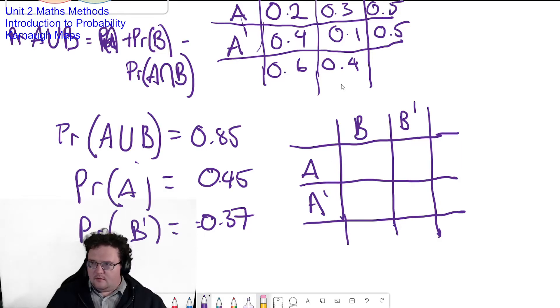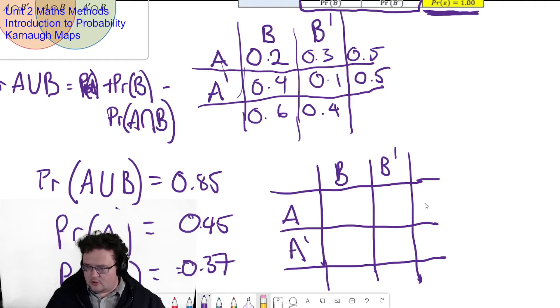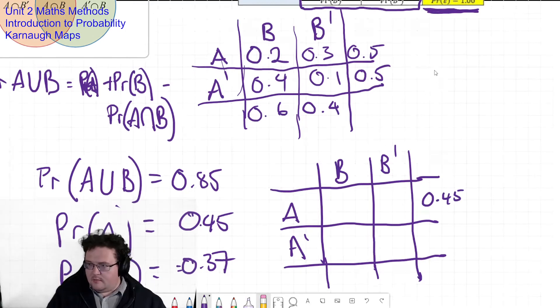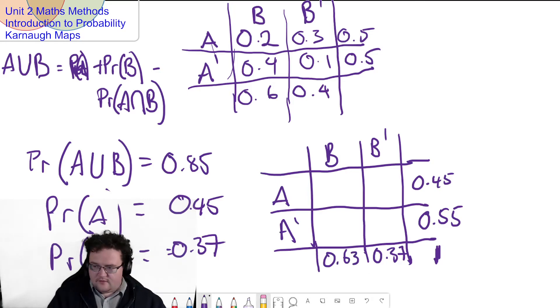And now I'm going to fill in the information that I know. Now, remember, based on the Karnaugh map, P-R-A goes in here. And I know that that's 0.45. The probability of B dash is 0.37. So I've got that. So we're off to a good start here. Because, remember, because this has to equal 1, therefore, I know that this has to equal 0.55 and this has to equal 0.63. So I've already got a whole bunch of information without much effort.